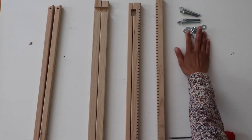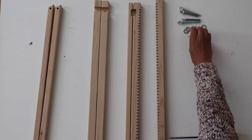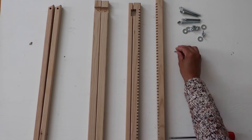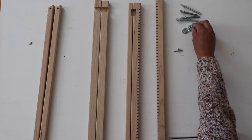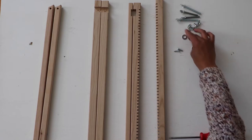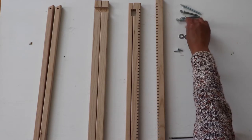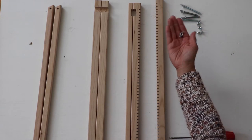So it should come with the hardware. You should have two screws and then four bolts and washers, four washers, and four of these little bow tie looking guys.